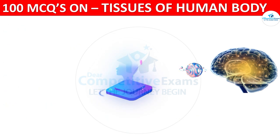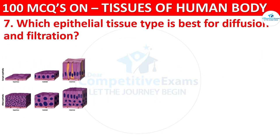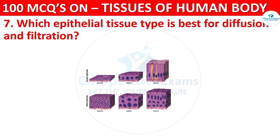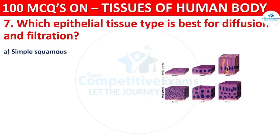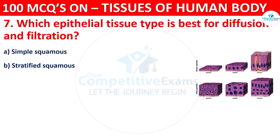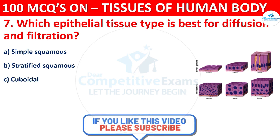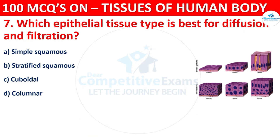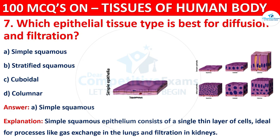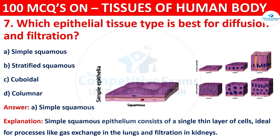Question number seven: which epithelial tissue type is best for diffusion and filtration? Options are simple squamous, stratified squamous, cuboidal, or columnar. The correct answer is A, that is simple squamous. Simple squamous epithelium consists of a single thin layer of cells, ideal for processes like gas exchange in the lungs and filtration in the kidneys.